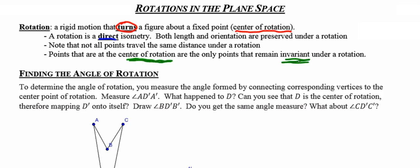Another important fact to know is that anybody that's at the center of the rotation is going to remain fixed, or in other words, remain invariant or not travel anywhere under the rotation. So the center of rotation is going to be the only point in the image that's not going to travel anywhere.